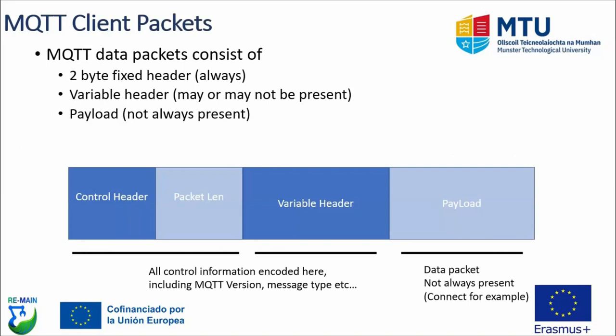MQTT data packets consist of a two-byte fixed header that is always present, an optional variable control header which may or may not be present, and a payload which may also not always be present. When sending data, packets will always have a payload, but initial connection messages may not have a payload at all. The control headers encode all the control information specifying various aspects of the MQTT client configuration — such as whether you want a clean session or message retention — that the broker uses to identify how the client wants to be handled.